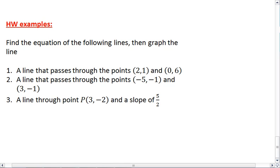I want you to find the equation for the following lines and then graph those lines. First, a line that passes through the points (2,1) and (0,6). Then, a line that passes through the points (-5,-1) and (3,-1).